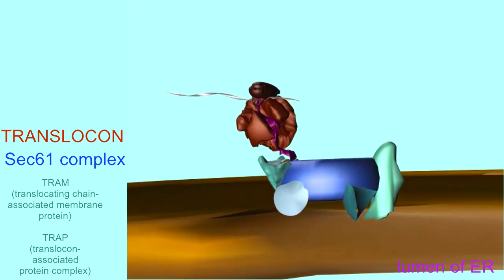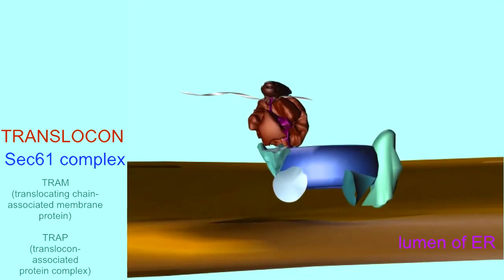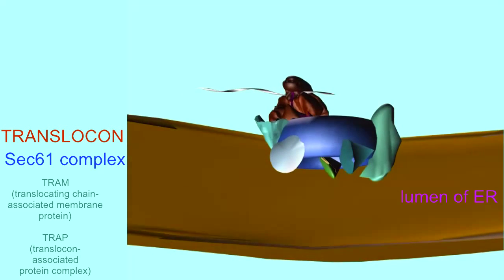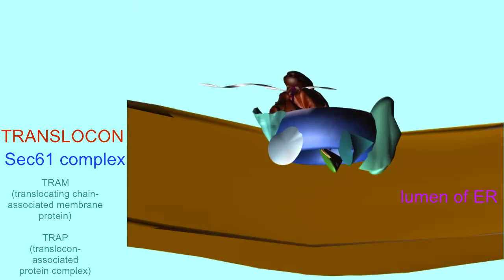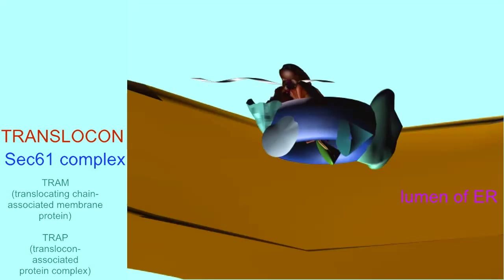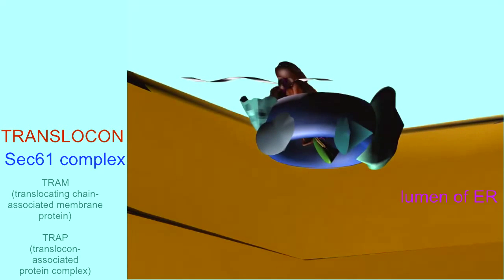the growing peptide is directed through a channel in the endoplasmic reticulum membrane. This channel is composed of a number of proteins, primarily the SEC61 complex, with several other proteins as well, such as TRAM and TRAP.